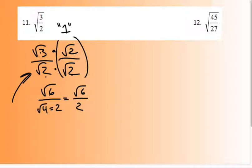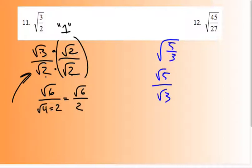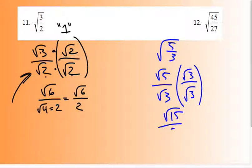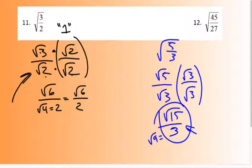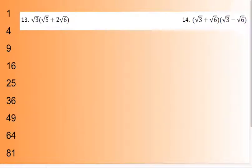For number 12, I can divide 45 and 27, breaking it down to 5 thirds. Then multiply by √3 over √3 — that gives square root of 9 in the denominator, so it's 3. The answer is √15 over 3. Don't get in the habit of thinking you can simplify √15 over 3 into √5 — you can't. The square root of 15 is different than 15; you can only remove something from under the radical by actually taking its square root.